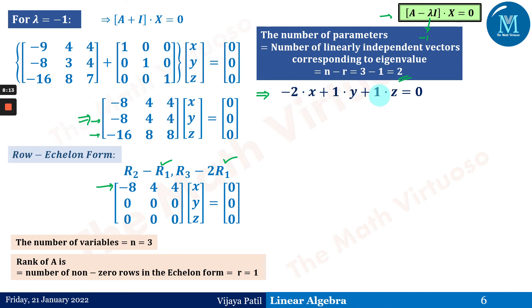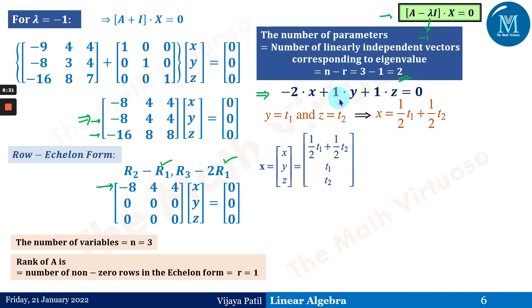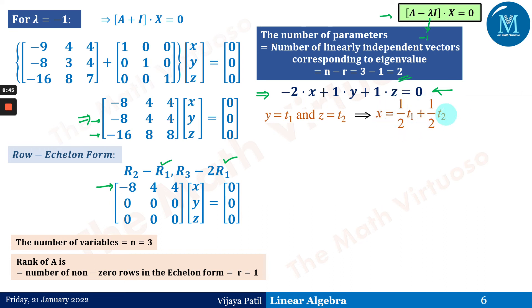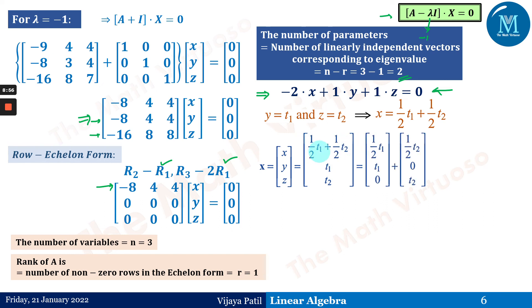In this example there is no zero coefficient, so we are free to assume any two variables. We choose y = t1, z = t2. From the equation we get x = (1/2)t1 + (1/2)t2, which is a combination of both parameters — unlike the previous example where x depended only on t2.